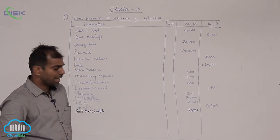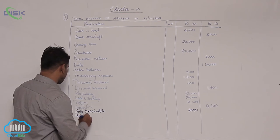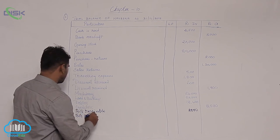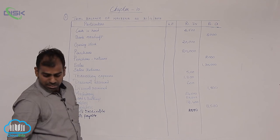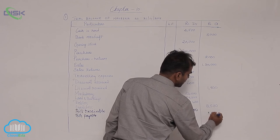Now next you have bills payable coming to 1,650. So we write it on the credit 1,650.